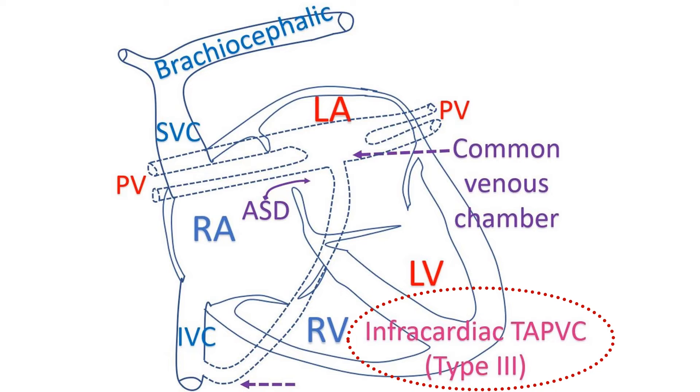There is also a fourth mixed type which is much less common. In the infracardiac variety, as the blood returned from the lungs passes through the liver, the flow is partially obstructed. This causes back pressure in the lungs and collection of fluid within the lungs, known as pulmonary edema, causing severe breathlessness in the baby in addition to blue colour. That is a life-threatening situation needing emergency treatment.